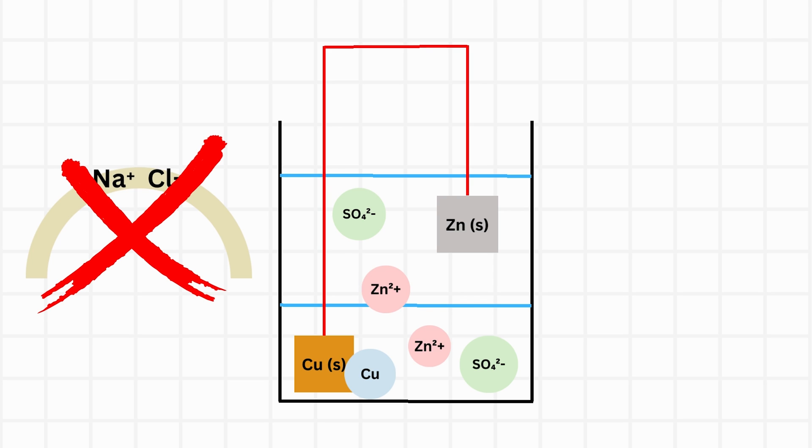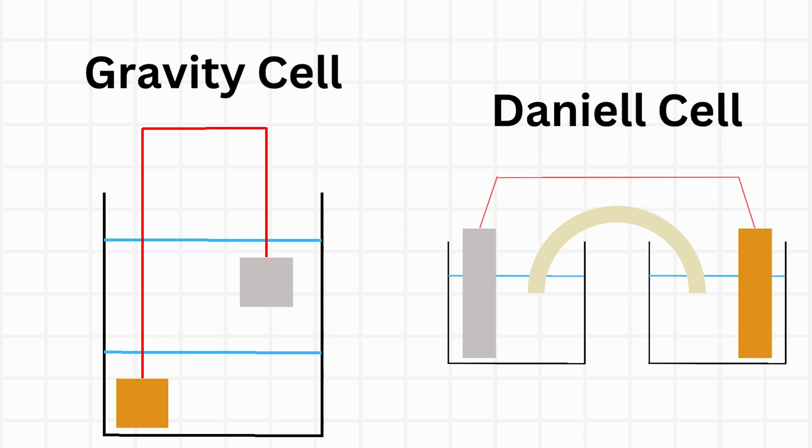The zinc ions produced in the zinc sulfate solution go to the copper sulfate solution in the bottom and fill the space of missing copper ions. Therefore, gravity cell needs no salt bridge, unlike Daniel cell.